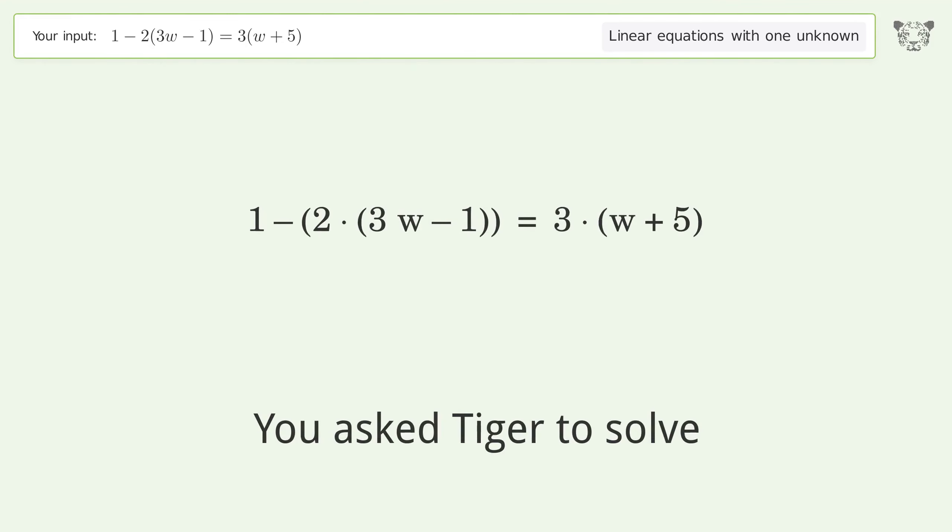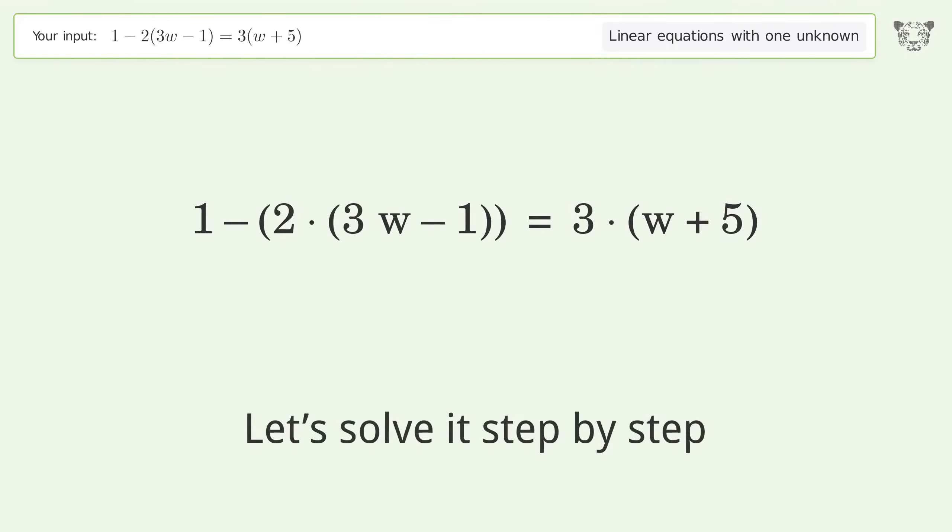You asked Tiger to solve this linear equation with one unknown. The final result is w equals negative 4 over 3. Let's solve it step by step.